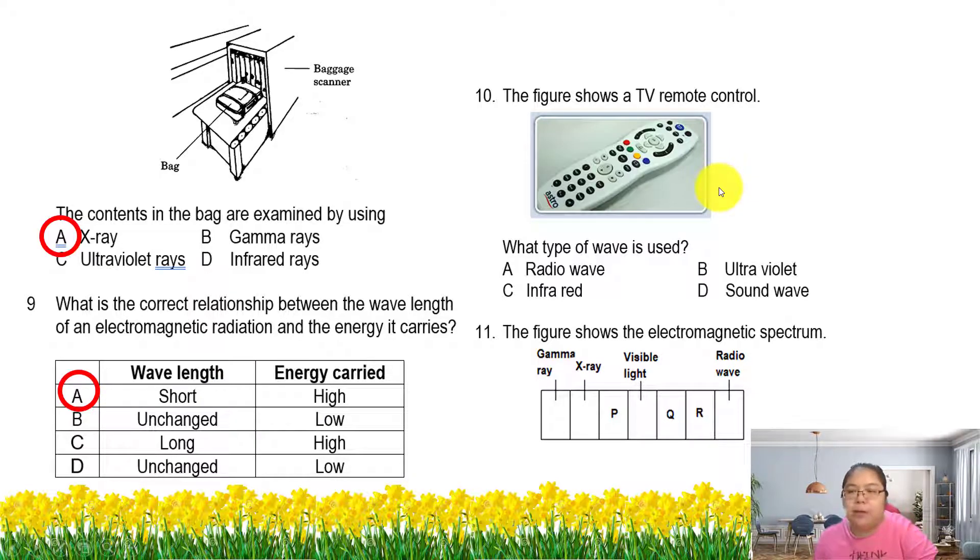Normally, frequency high, energy high. From here we find wavelength short, energy high. Wavelength short means frequency high, so the answer is A. This one is a remote control, so that's a type of infrared.